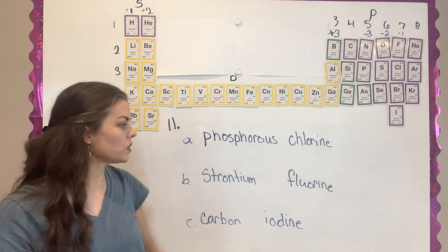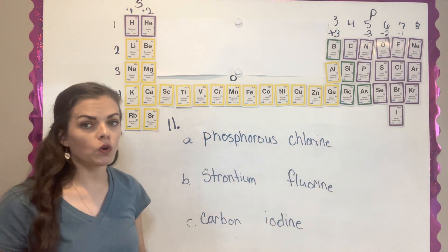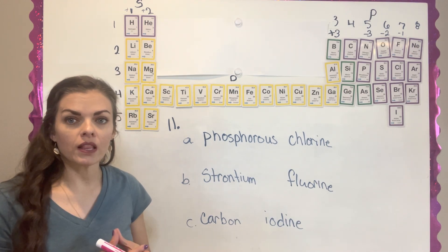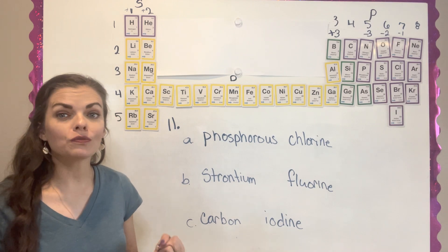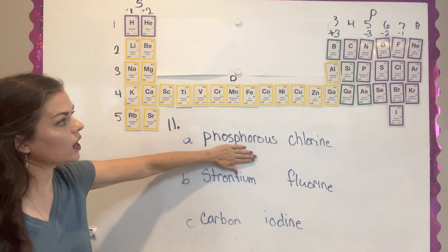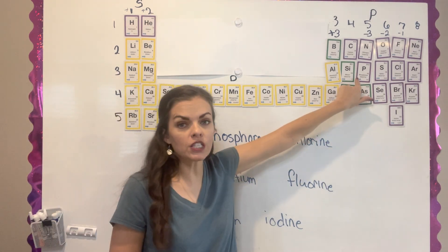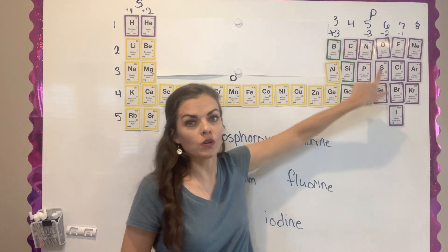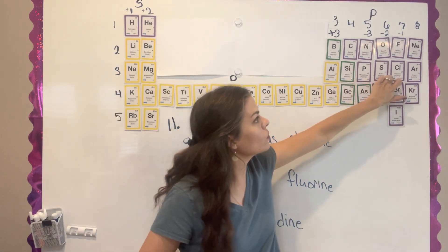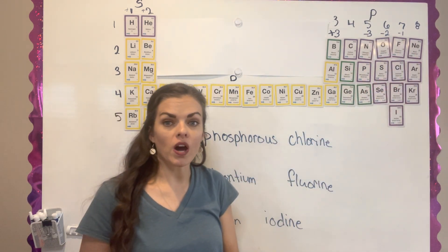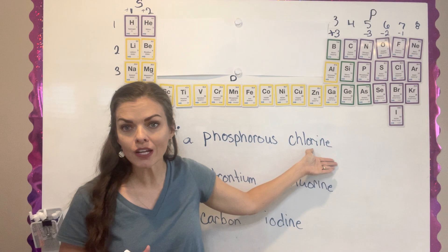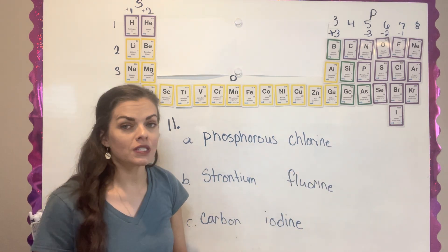Question eleven gives you three groups of elements and wants you to know which ones could make an ionic compound. Remember, for an ionic compound you need something giving away electrons and something taking — a metal and a non-metal. The first pair is phosphorus and chlorine. Phosphorus has a negative three — it wants to take in electrons — and chlorine has a negative one — also wanting to take. Nobody's giving any, so it is not going to make a compound.